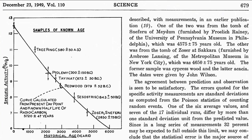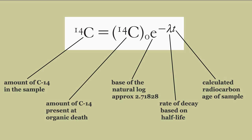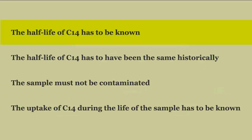All sounds good so far. But now things get a little complicated, and here we need to do a little mathematics. This is the Rutherford decay equation. To find the age T requires that the C14 at time zero and the lambda are known. In a nutshell, accurate radiocarbon dating requires that four assumptions be made: the half-life of C14 has to be known so that the decay rate can be accurately determined; the half-life of C14 has to have been the same historically; the sample must not be contaminated; and the uptake of C14 during the life of the sample has to be known.